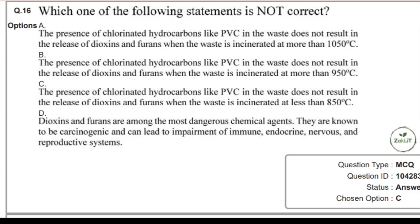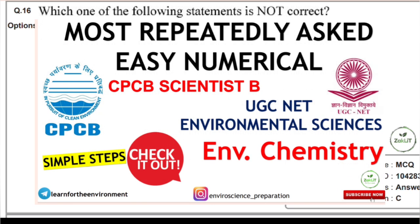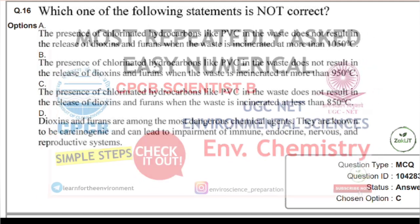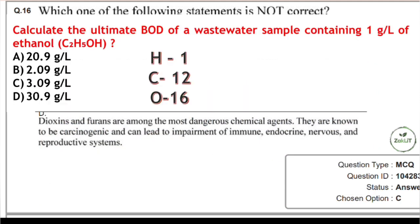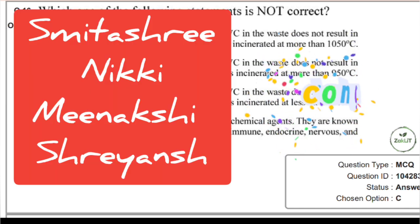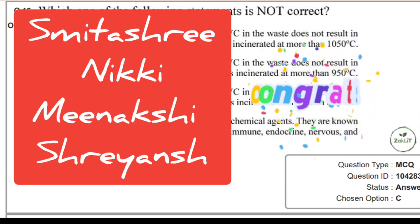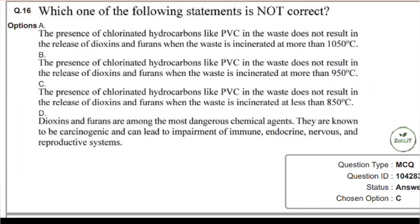Before going into the questions, I would like to congratulate the successful candidates who gave the correct answer in the previous video on environmental chemistry. The question was from the calculation of BOD of wastewater, and the correct option was option B: 2.09 gram per liter. The correct answer was given by Smithashree, Nikki, Meenakshi and Shreyans. Well done, guys. Now let's start with today's video.